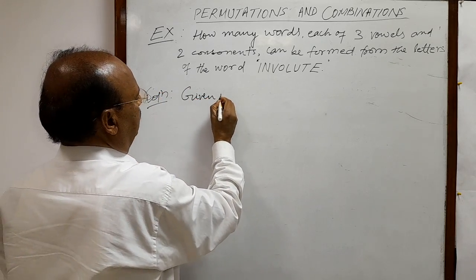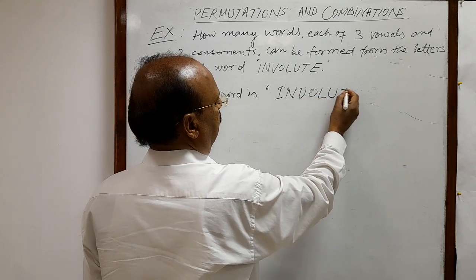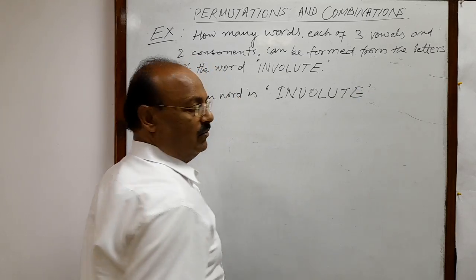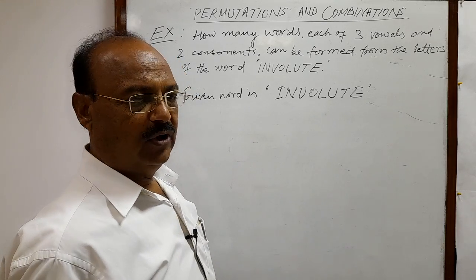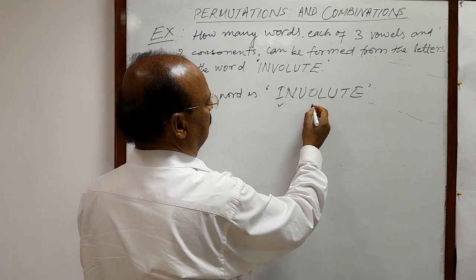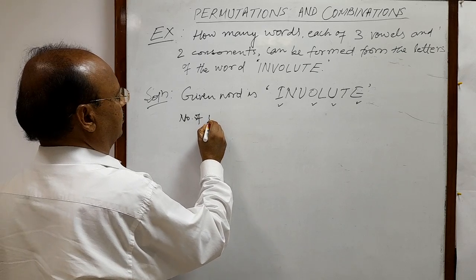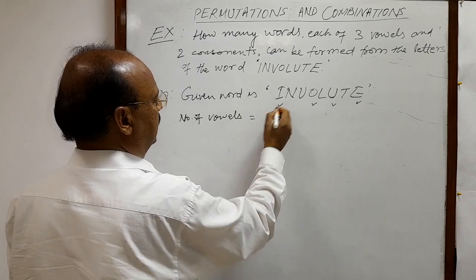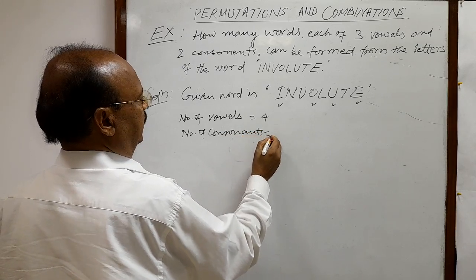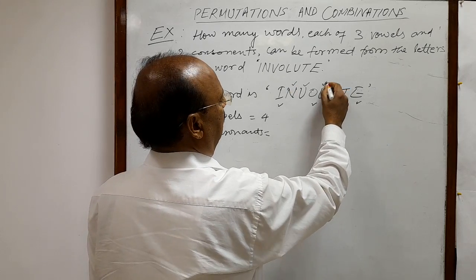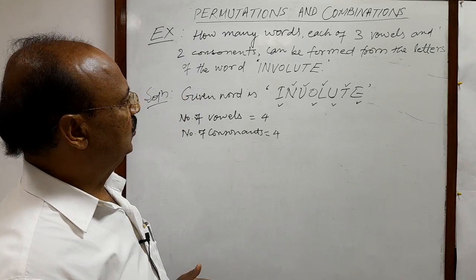The given word is INVOLUTE. The total number of letters is 8, and out of these eight letters we have four vowels and four consonants. The four vowels are I, O, U and E. The four consonants are N, V, L and T. We have to form all possible words, each consisting of three vowels and two consonants.